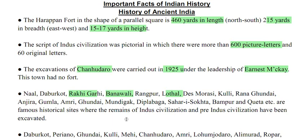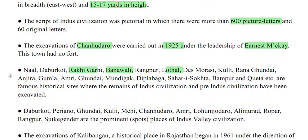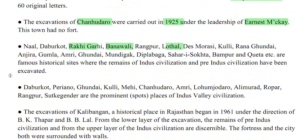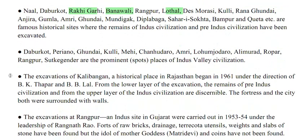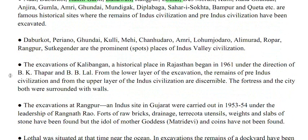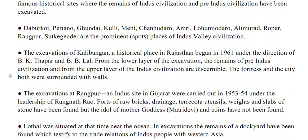The most prominent sites of Indus Valley civilization include: Periyano, Gundai, Kulli, Mehi, Chanudaro, Amri, Lom, Jadurau, Alimurad, Ropar, Rangpur, and Shrutka-Jandar.